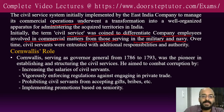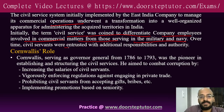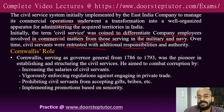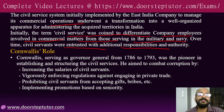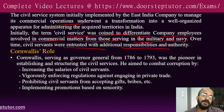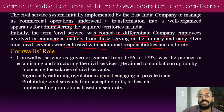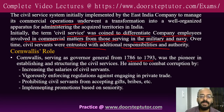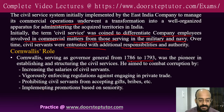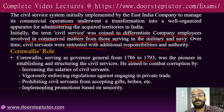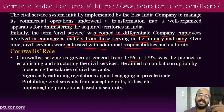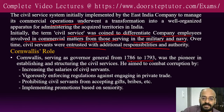Over time, civil servants were entrusted with additional responsibilities and authorities. Cornwallis was the first governor general after Clive and Hastings who increased the horizon of civil servants. Serving as governor general between 1786 and 1793, he was the pioneer in structuring the civil services.